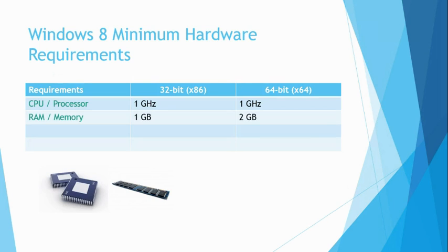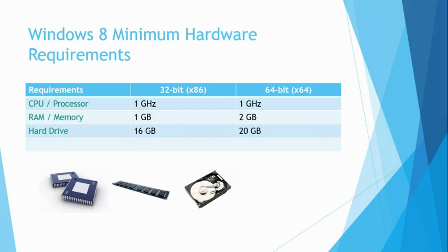The third minimum hardware requirement for Windows 8 is the hard drive requirement. If you are installing the 32-bit version of Windows 8, you need to have 16 GB of free hard drive space available. If you are installing the 64-bit version of Windows 8, this is increased to 20 GB of free hard drive space.